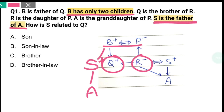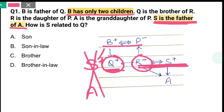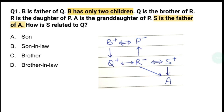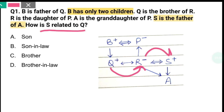तो दो जो B के children हैं वो Q और R already थे। तो S जो है वो R का husband हो जाएगा, क्योंकि Q already male था। S जो है वो R का husband, और साथ ही S जो है वो A का father है, यानि R जो है वो A की mother हो जाएगी। अब हमें question पूछा गया है How is S related to Q? तो Q की sister है R और sister का husband S। Sister का husband होता है brother-in-law। तो answer आएगा S is the brother-in-law of Q।